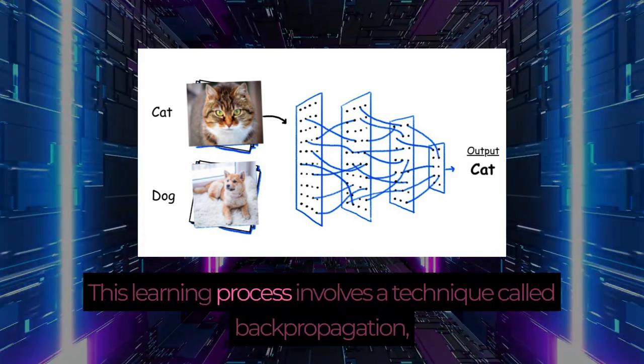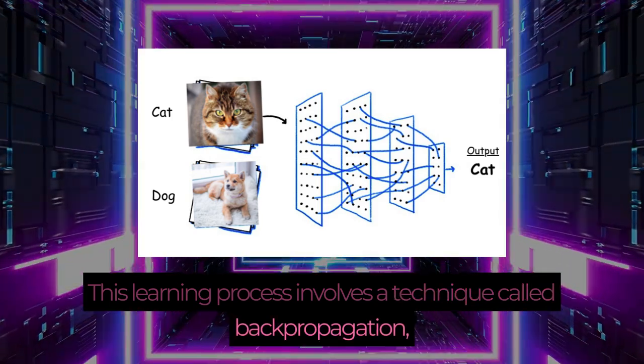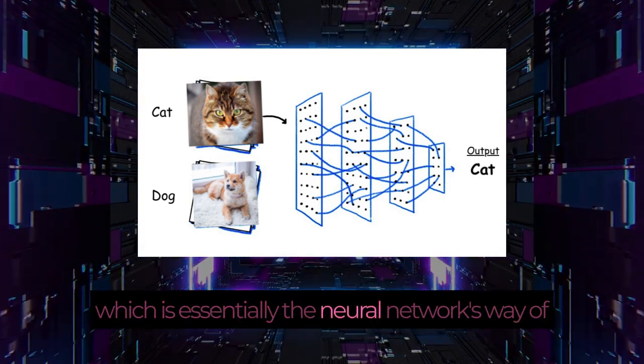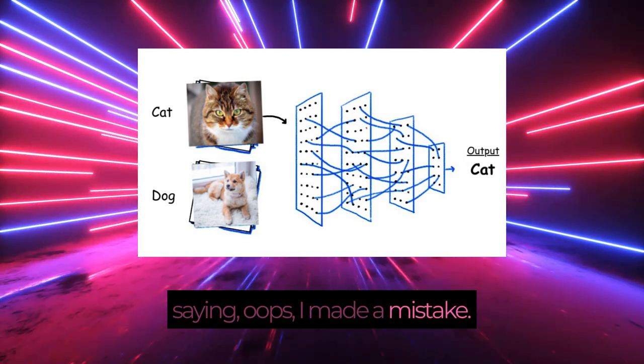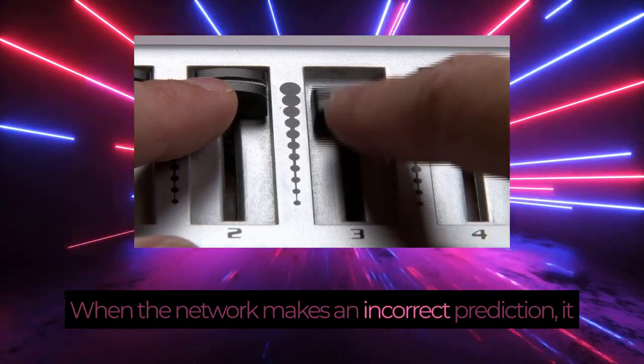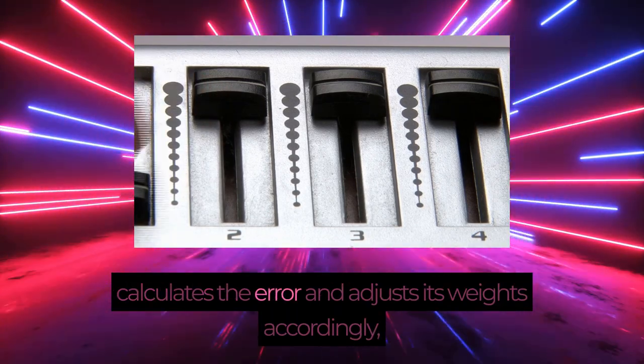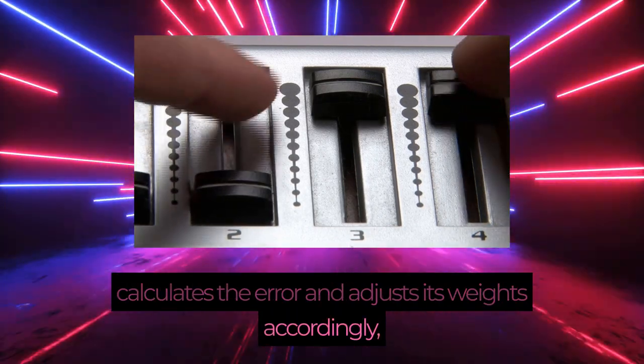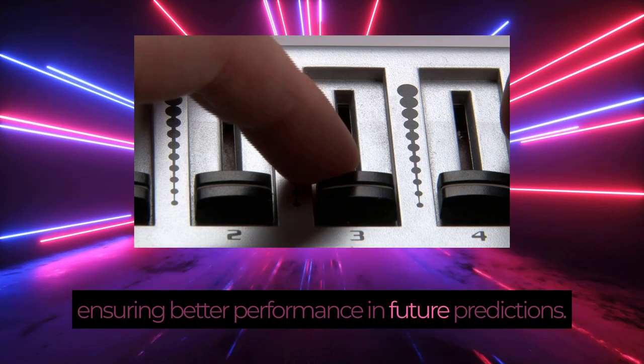This learning process involves a technique called backpropagation, which is essentially the neural network's way of saying, 'Oops, I made a mistake. Let's fix that.' When the network makes an incorrect prediction, it calculates the error and adjusts its weights accordingly, ensuring better performance in future predictions.